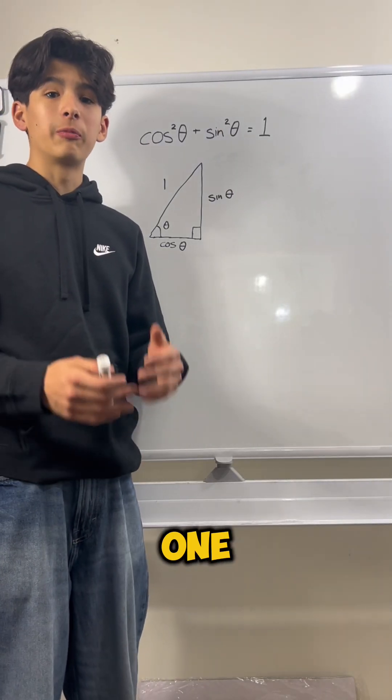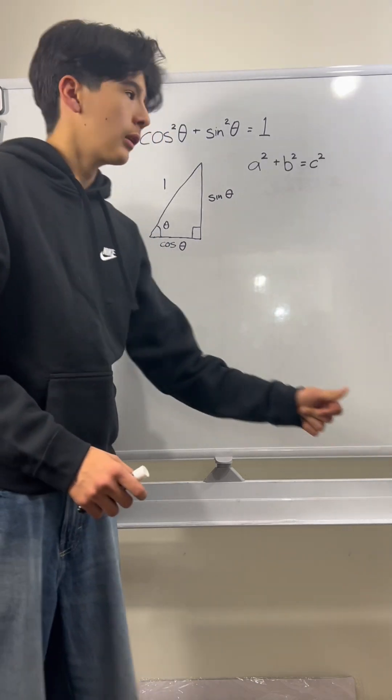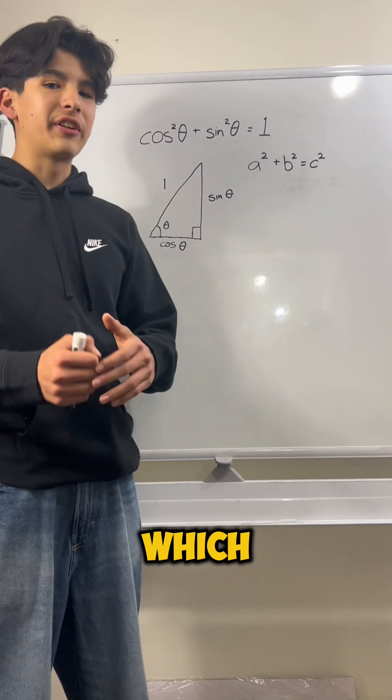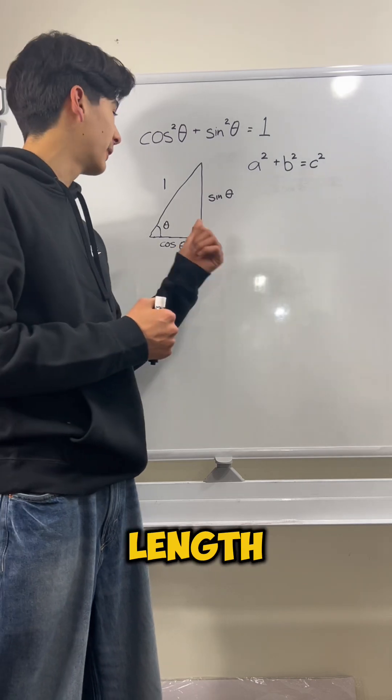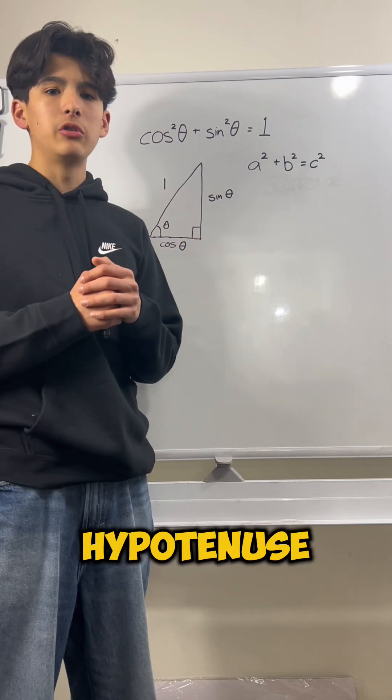Now let's think about another one of Pythagoras' formulas: the Pythagorean theorem, which says that for any right triangle, the length of one of the sides squared plus the length of the other side squared should equal the length of the hypotenuse squared.